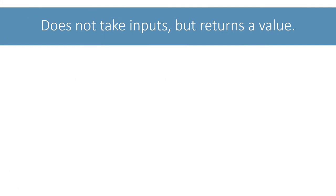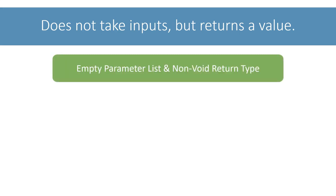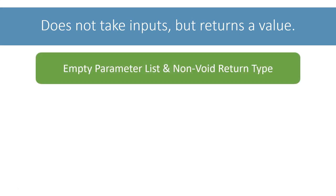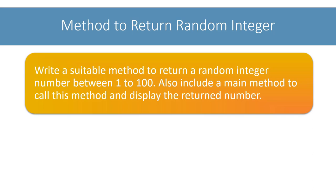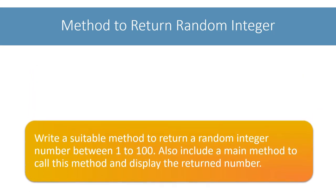Moving on to the final type of methods — these methods don't take any inputs but return a value. They are characterized by empty parameter lists and non-void return types. The first program in this category is: write a suitable method to return a random integer number between 1 to 100. Also include a main method to call this method and display the returned number. Let's figure out the prototype of this method.